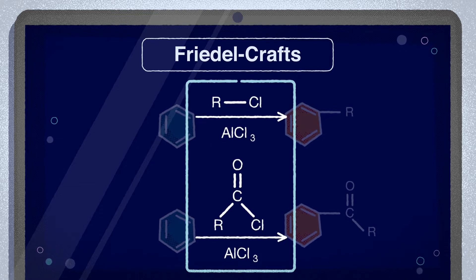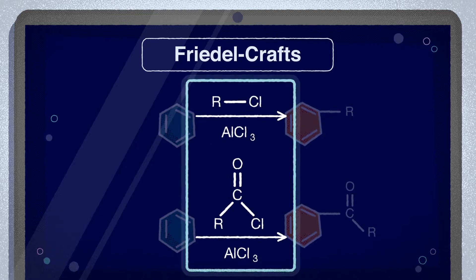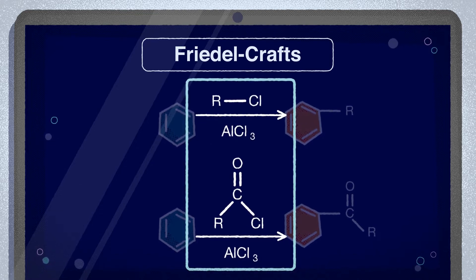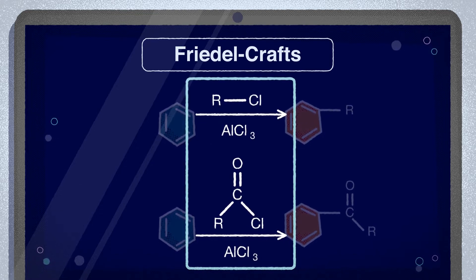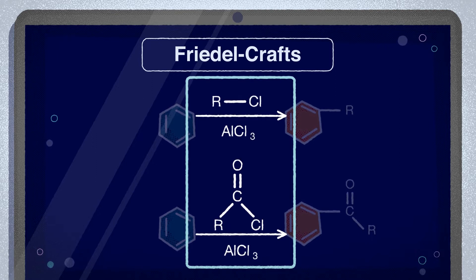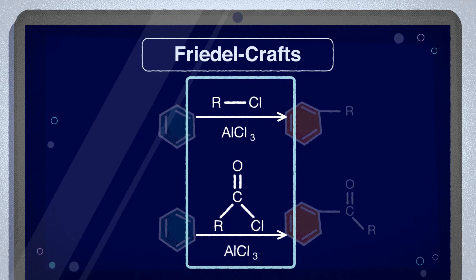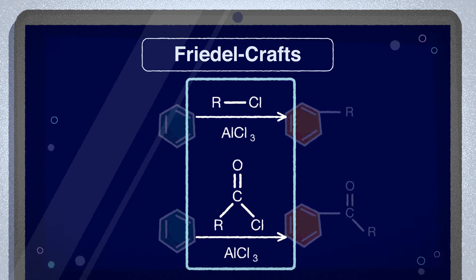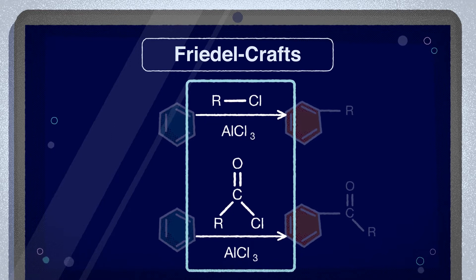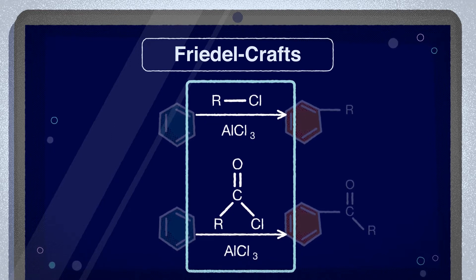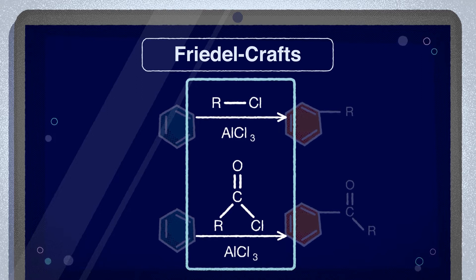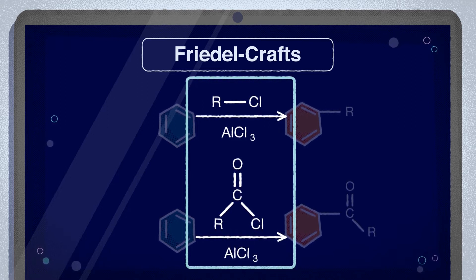The reaction can proceed with an alkyl halide or an acyl halide. It works in the same way, but the reaction product is obviously different. A Lewis acid catalyst is necessary to activate the halide reagent — this is typically aluminum chloride or ferric chloride. Other metal halides can be used, but are less common.